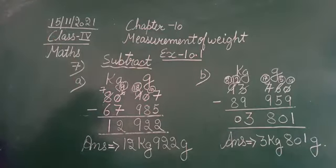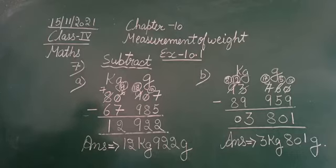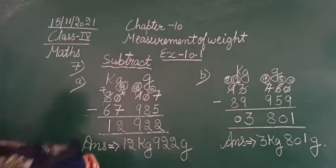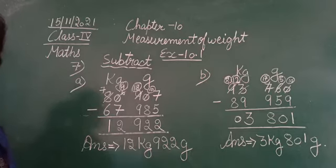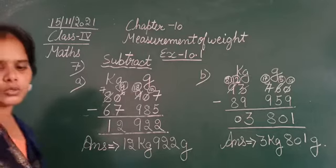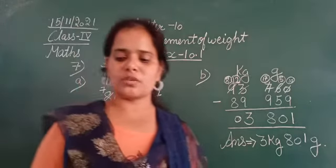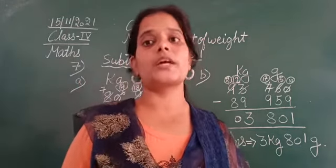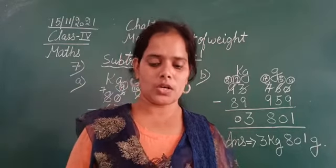So this is a simple subtraction as you have done earlier, just similar to that. This is the solution for the A and B part of question number 7. You can pause it here and note it down in your notes. Moving next to the question — the C part is also a subtraction, a simple subtraction that you will do by yourself.